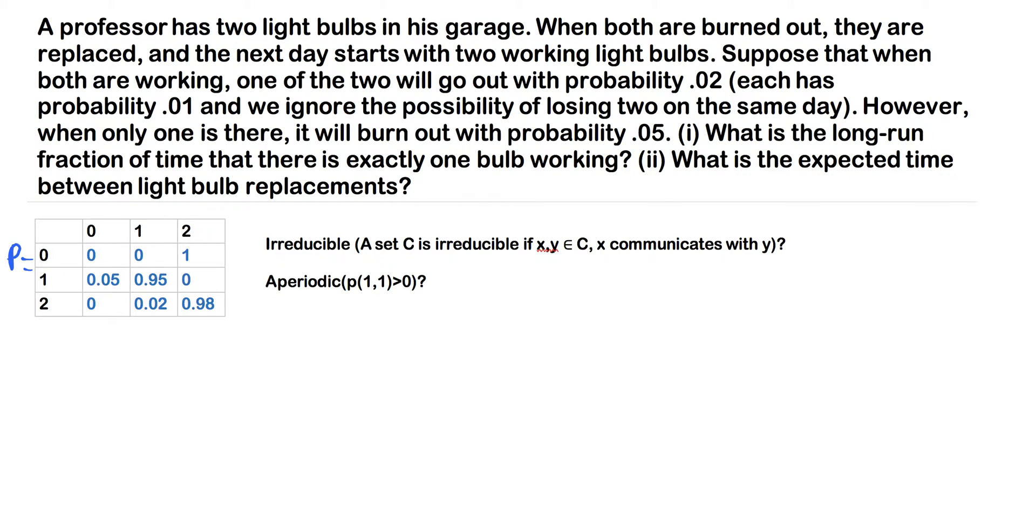The question says when both light bulbs are burned out, they are replaced, and the next day starts exactly with two working light bulbs. So if we look at this first row, we're starting with zero, and then in the next day, we're always going to end up with two.